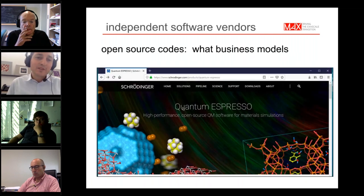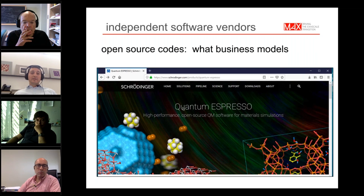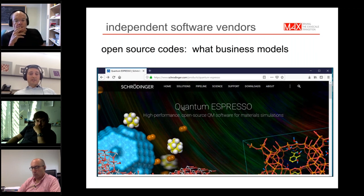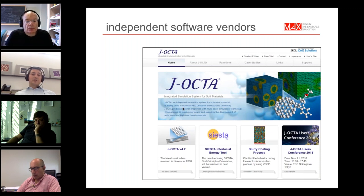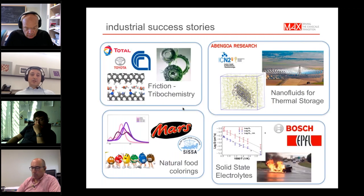Another example involved working with Intel engineers when the KNL Xeon Phi technology came out, also achieving very good performance on that architecture. Regarding interaction with independent software vendors: we explored what business models can be put in place. Quantum ESPRESSO was embedded in the Schrödinger Maestro suite, and SIESTA was embedded in the JALOP suite. Importantly, this demonstrates that these codes have been proven to reach industry standards, both in terms of software quality and reliability of outcomes.